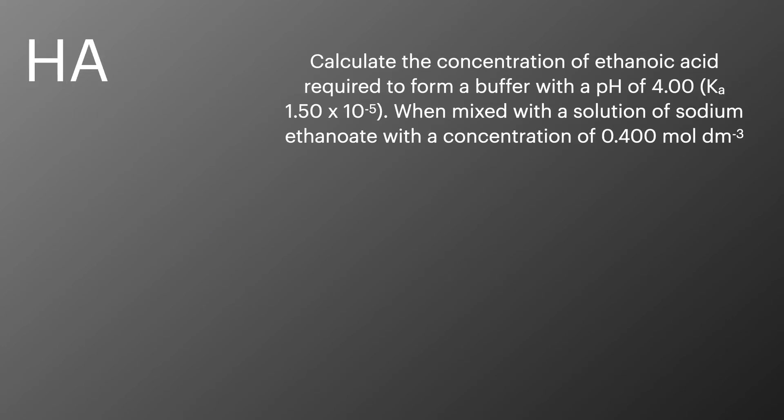In this second example, we're going to work out what concentration of weak acid or HA we need to form a buffer with a pH of 4. The equations we're going to need to use are the reverse of the pH equation where we're working out the concentration of hydrogen ions and then a rearranged form of the Ka expression. We'll use that reverse pH equation then to work out the concentration of hydrogen ions to be 1 times 10 to the minus 4.